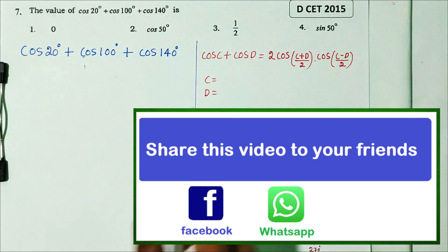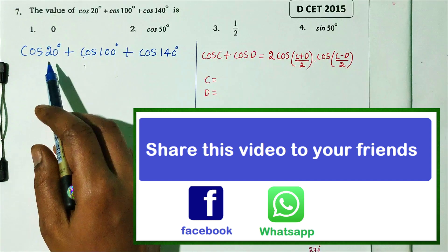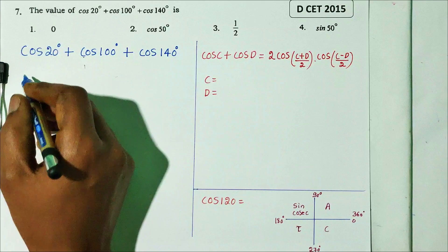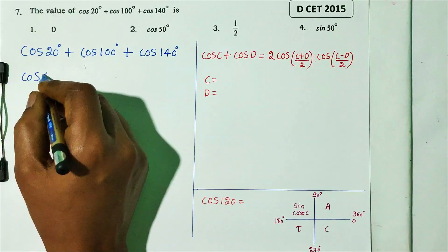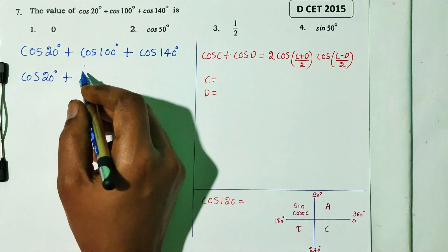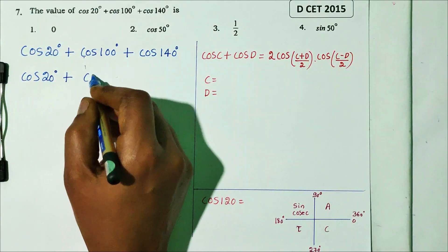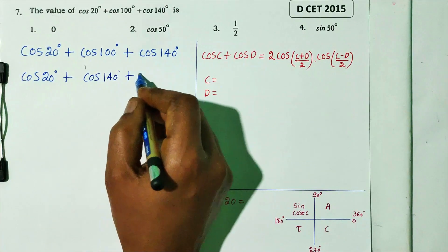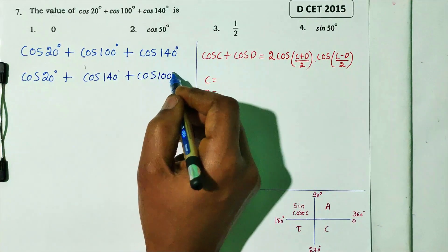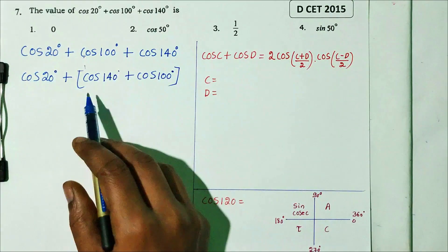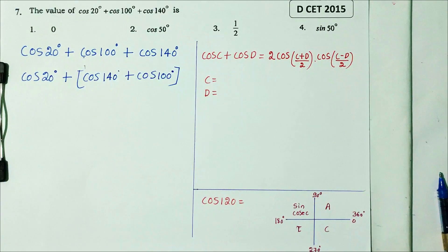4 options are there. Check the right answer. First, rearrange the terms. Take cos 140 plus cos 100, then add cos 20. Simplify the expression using sum-to-product formula.